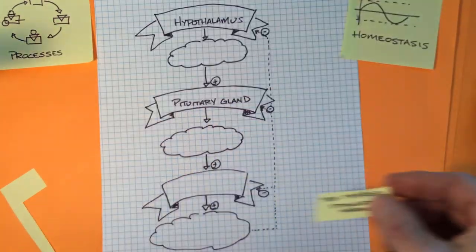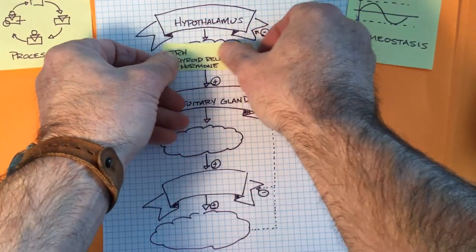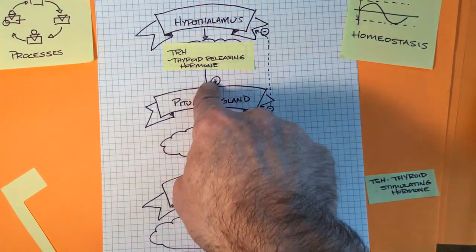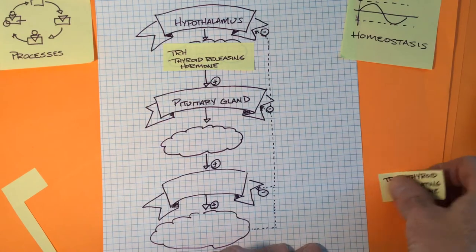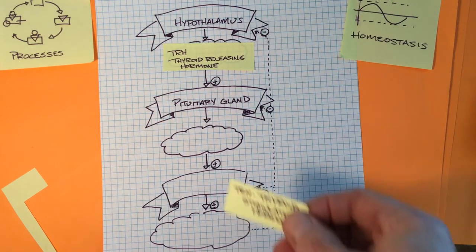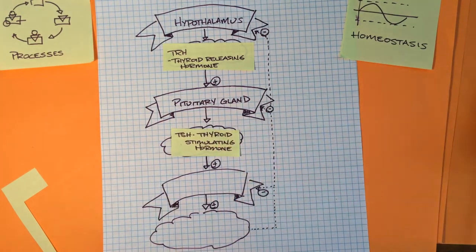My bad. That goes right here. Thyroid releasing hormone stimulates, has a stimulatory effect on the pituitary gland, and it causes pituitary gland to release thyroid stimulating hormone, which has a stimulating effect. That's that positive. On the thyroid gland.